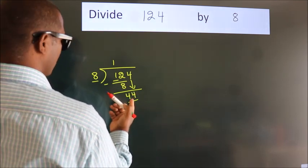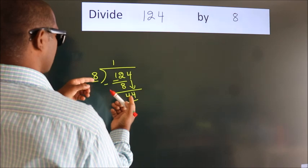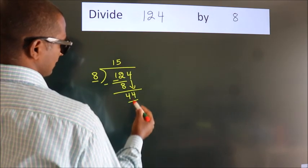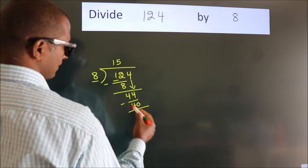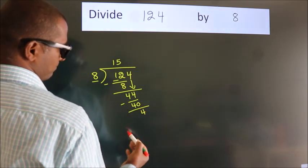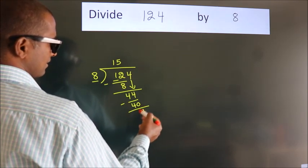A number close to 44 in the 8 table is 8 times 5, which is 40. Now we subtract and get 4.